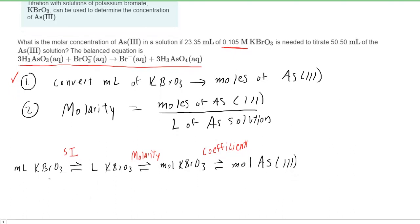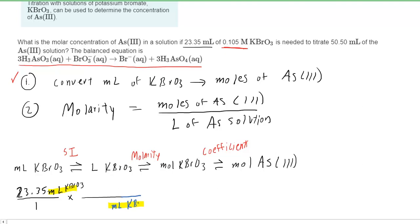We begin with the number of milliliters of KBrO3, which was given as 23.35 milliliters. Some students prefer to put this initial quantity over a 1. Whenever we do a unit conversion, we'll be multiplying by a conversion factor. Since we have milliliters of KBrO3 as our initial quantity, we place that same unit in the denominator of the conversion factor. Our roadmap shows us we're converting from milliliters into liters, so we place liters in the numerator. The relationship is that 1 milliliter is equivalent to 10⁻³ liters. With that conversion factor set up, we can cancel out the milliliters.